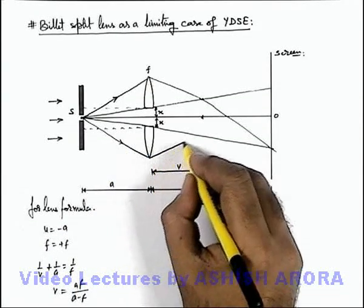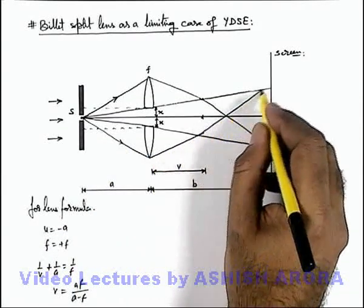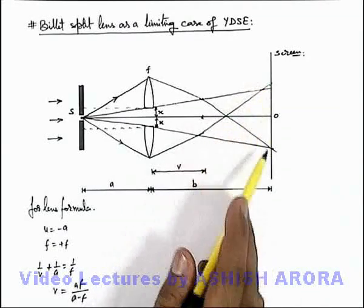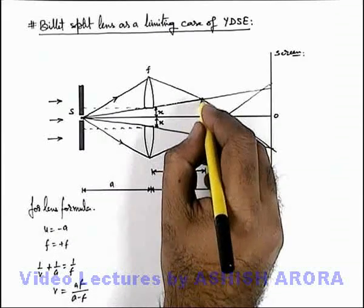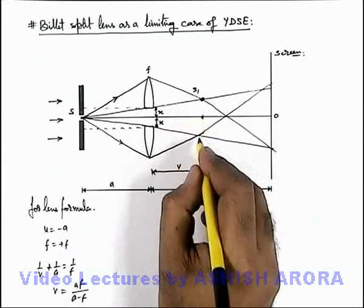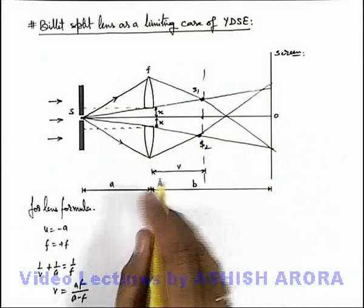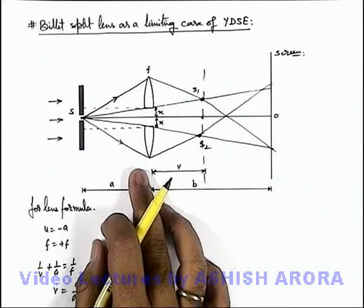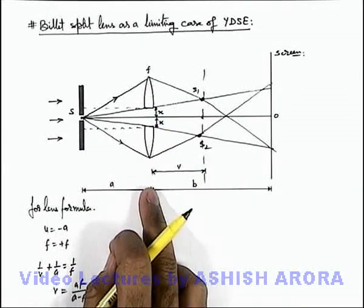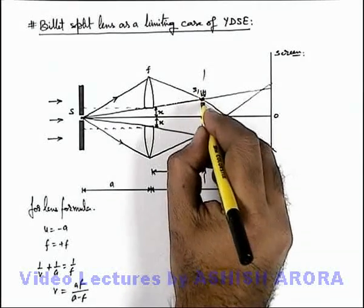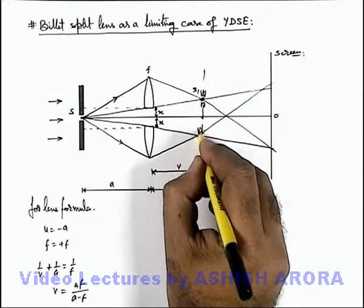This is the way how light is incident onto the screen also. Here, this is the first image S1 and this is the second image S2, which are obtained in the plane which is located at a distance v from the plane of this lens. Here, actually this is the image of this slit which is S1, and this is another image of the slit which is S2.